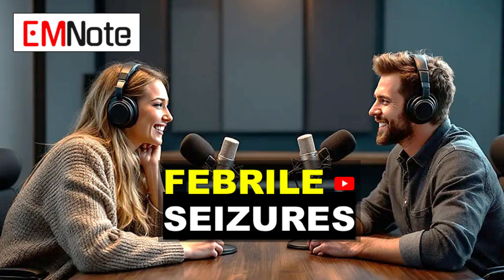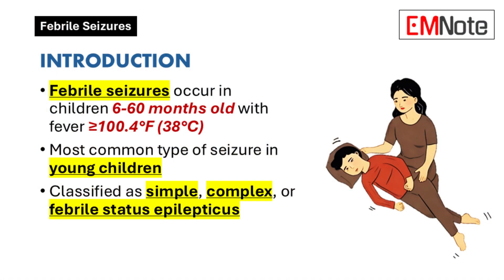We're going to really try to dig into those little nuances of this condition. It's really common, but it can be a little perplexing sometimes. So let's start with a quick reminder: what exactly defines a febrile seizure? These are seizures that happen in kids 6 to 60 months old, and crucially with a fever, but without any signs of infection in the central nervous system.